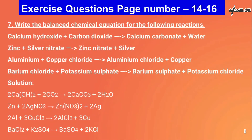Question number seven: write the balanced chemical equation for the following reactions. Calcium hydroxide plus carbon dioxide gives calcium carbonate plus water; zinc plus silver nitrate gives zinc nitrate plus silver; aluminium plus copper chloride gives aluminium chloride plus copper; barium chloride plus potassium sulfate gives barium sulfate plus potassium chloride. Solutions: Ca(OH)₂ + CO₂ → CaCO₃ + H₂O; Zn + 2AgNO₃ → Zn(NO₃)₂ + 2Ag; 2Al + 3CuCl₂ → 2AlCl₃ + 3Cu; BaCl₂ + K₂SO₄ → BaSO₄ + 2KCl.